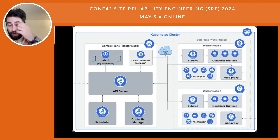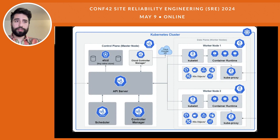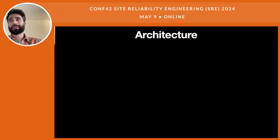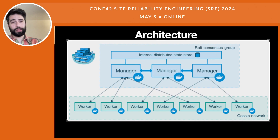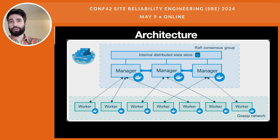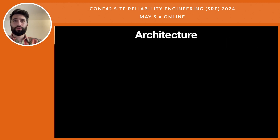Almost every Kubernetes presentation starts with the high-level architecture view: the control plane with API server, scheduler, controller manager, etcd, and the data plane with workers. But if we look at another technology, it also has a control plane with managers, a raft-based state store like etcd, and a data plane with workers — so there are similarities. This begs the question: what's the special thing about Kubernetes?